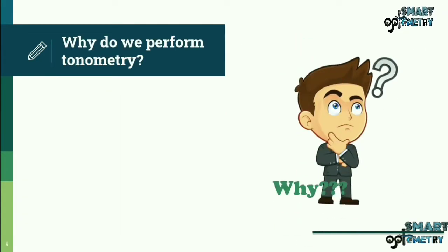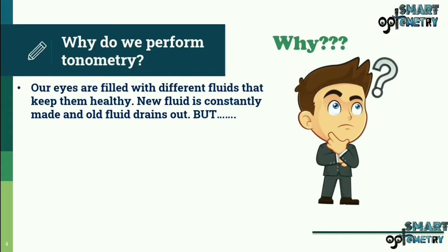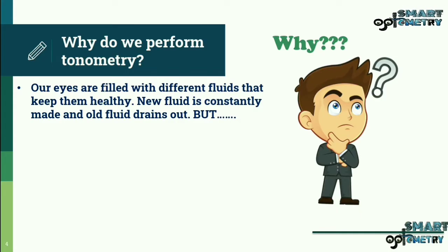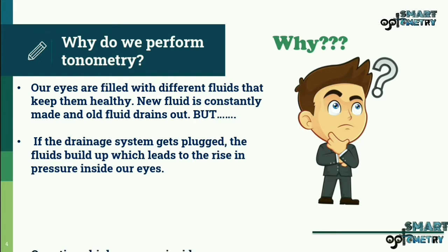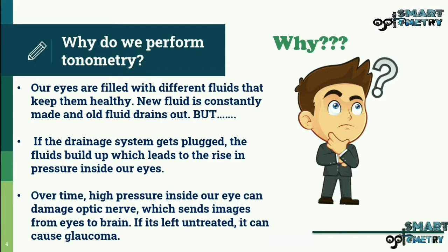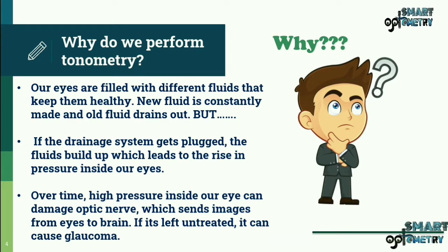Why do we perform tonometry? Our eyes are filled with different fluids that keep them healthy. New fluid is constantly made and old fluid drains out, but if the drainage system gets blocked, the fluids build up, leading to a rise in pressure inside our eyes. Over time, high pressure inside the eye can damage the optic nerve, which sends images from the eyes to the brain. If left untreated, it can cause glaucoma.